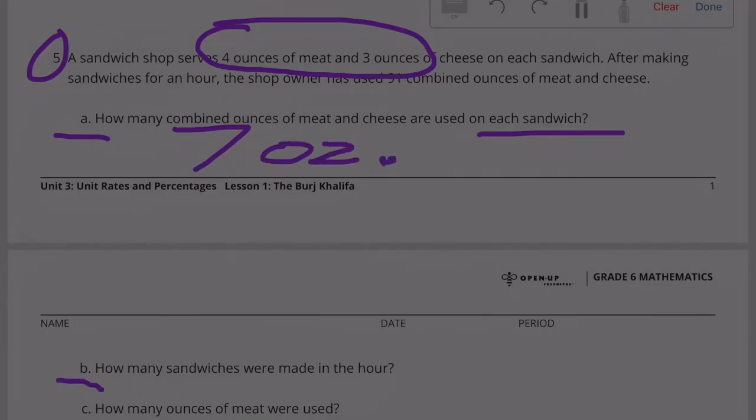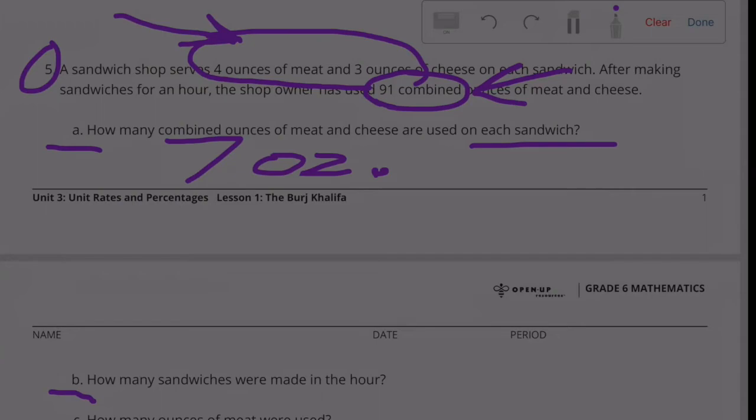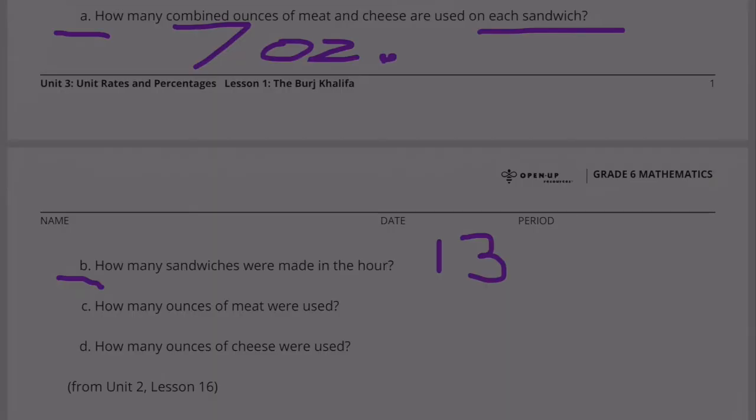Part B: How many sandwiches were made in the hour? So 91 combined ounces of meat and cheese divided by the total number of ounces of meat and cheese. So it's going to be 91 divided by 7, and that's going to be 13. 13 sandwiches were made in the hour.